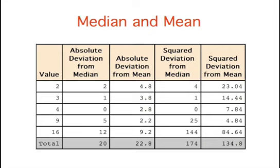Here, we compare the mean and median for this small set of data. The median is 4.0 and the mean is 6.8. Looking at the first row, the absolute difference between the value 2 and the median of 4 is 2. The absolute difference between 2 and the mean of 6.8 is 4.8. Squaring these values, we find that the squared deviation from the median is 4 and the squared deviation from the mean is 23.04.